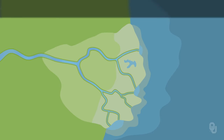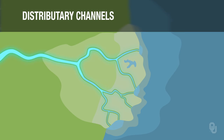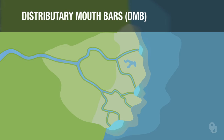We're going to talk now about a fluvially dominated delta, like the Mississippi Delta. What are the environments that occur on a fluvially dominated delta? They include the distributary channels, which are basically the river, and the distributary mouth bars, or DMBs — that's the place where the river actually enters the ocean and consists mostly of sand.